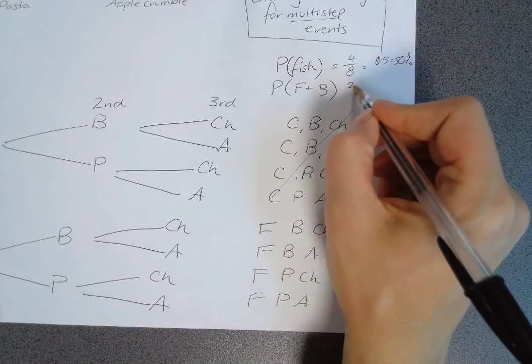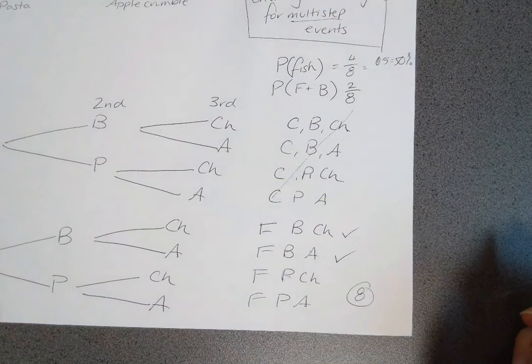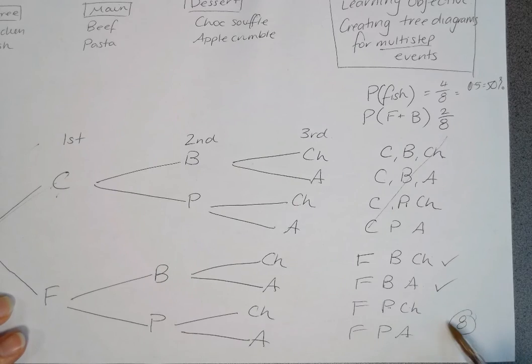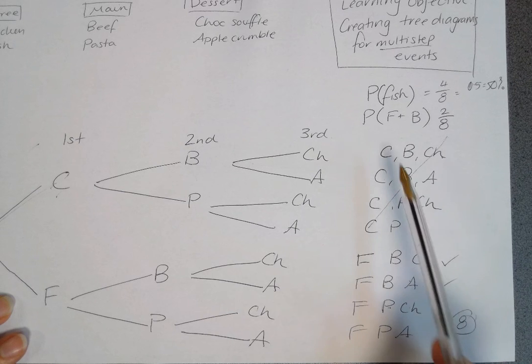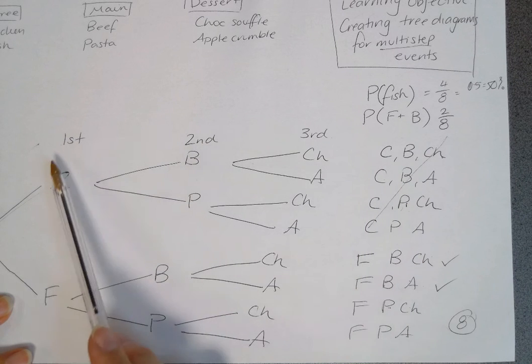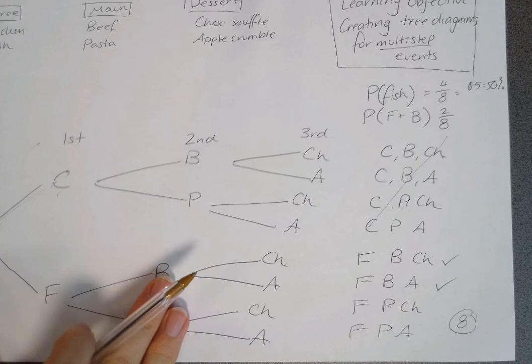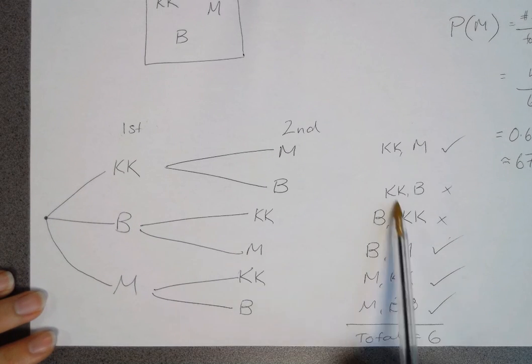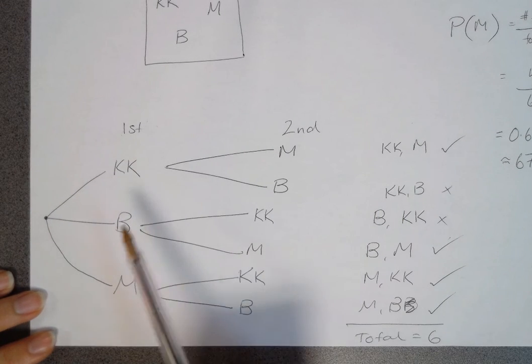In this case it is two out of eight. You have to look at the total number of possibilities and then look at all the things that are included in the combinations. Now sometimes the choices might not be affected by the step before, or like in our other example, sometimes the outcomes will be affected.